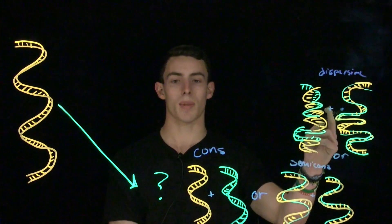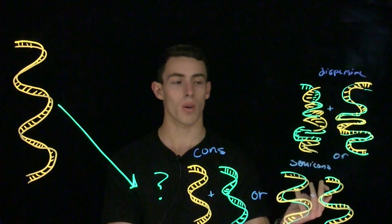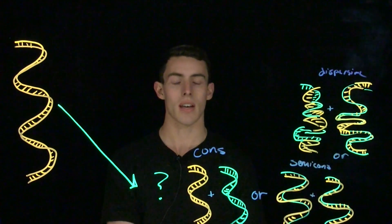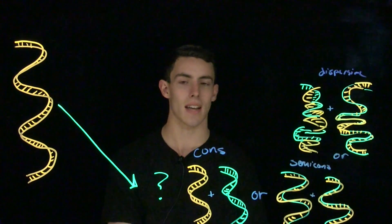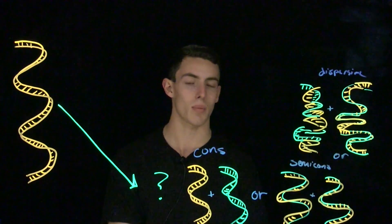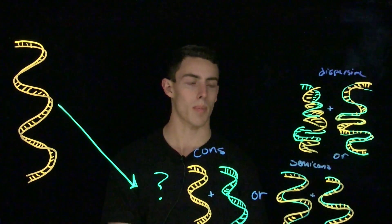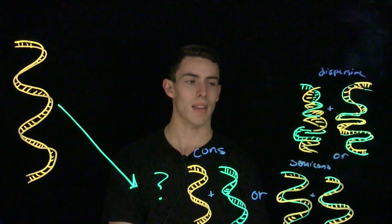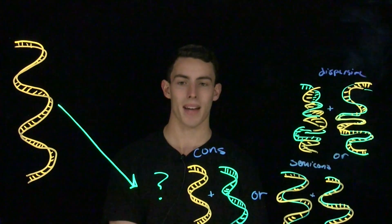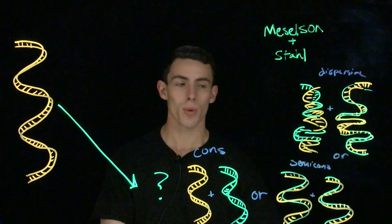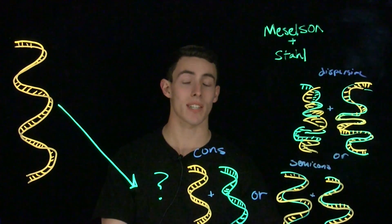In dispersive replication, there is no conservation. DNA is split up into a bunch of fragments, those fragments are replicated, and they are ligated back together.